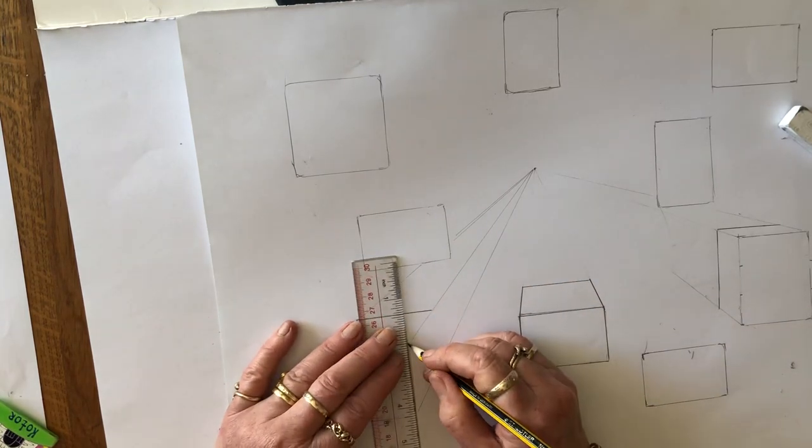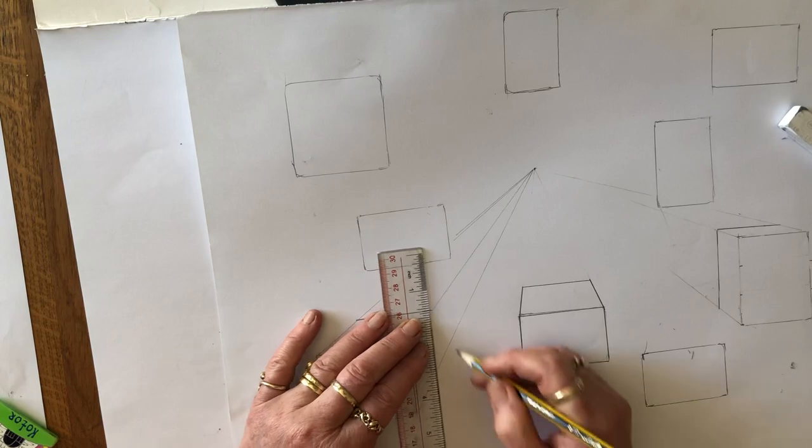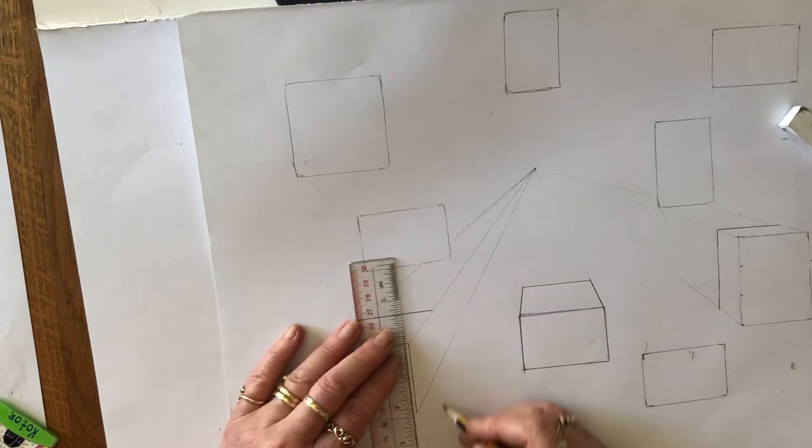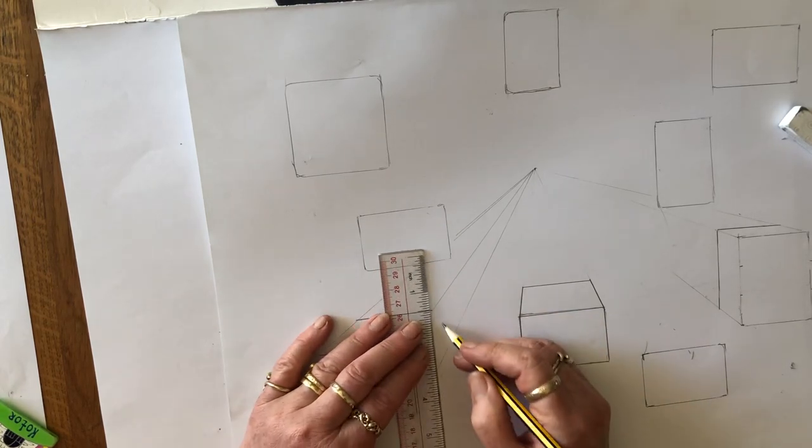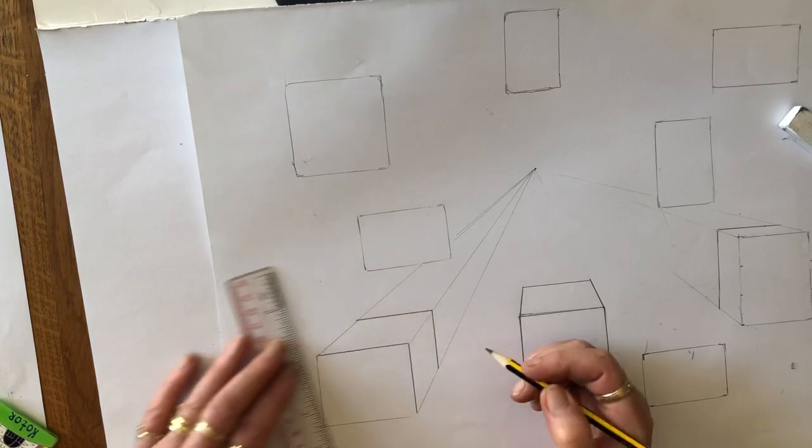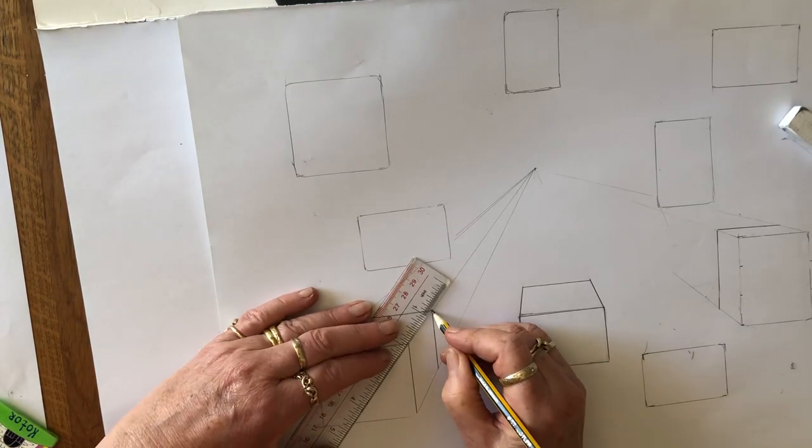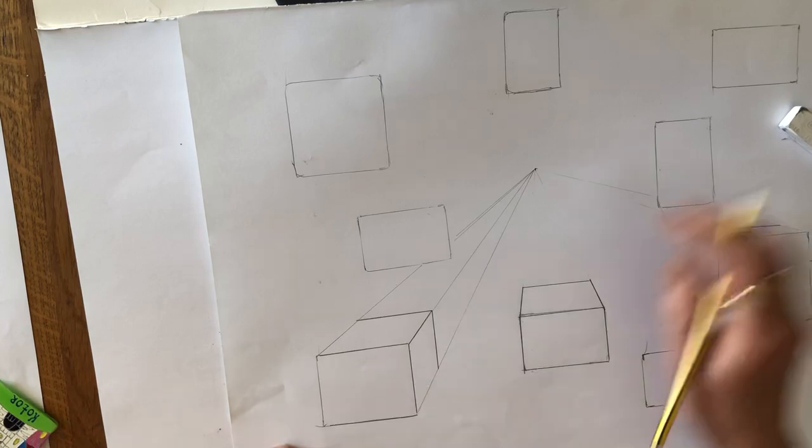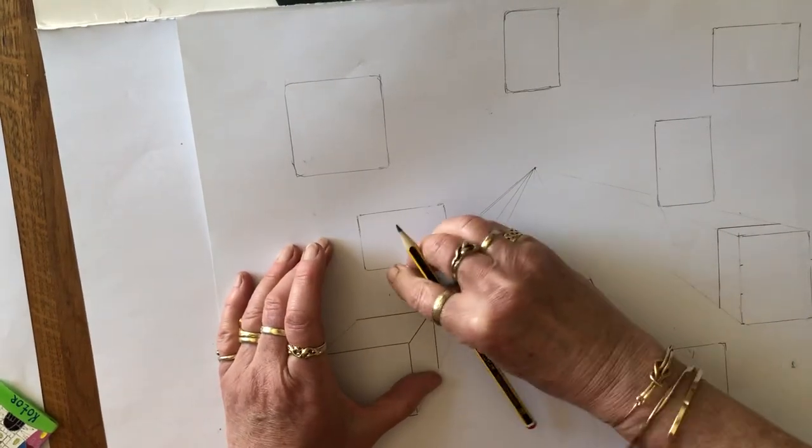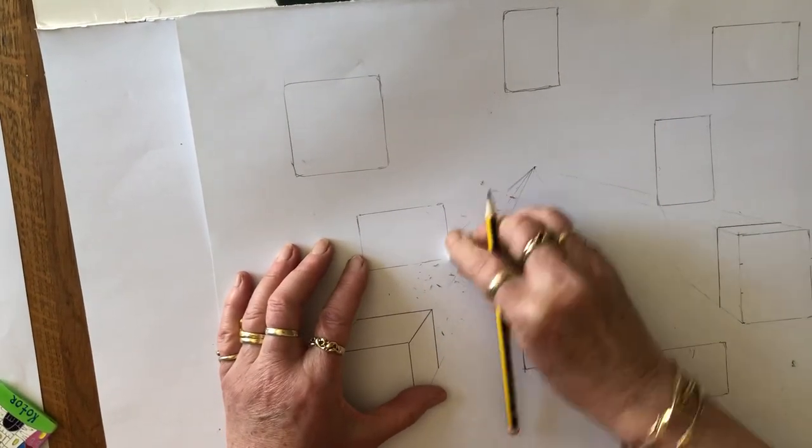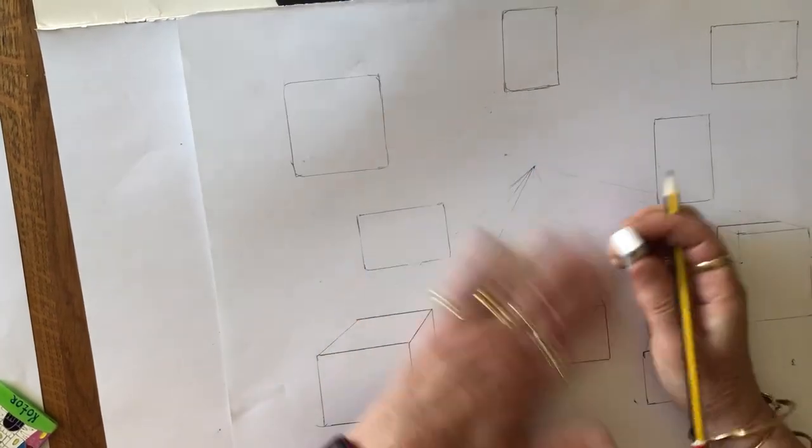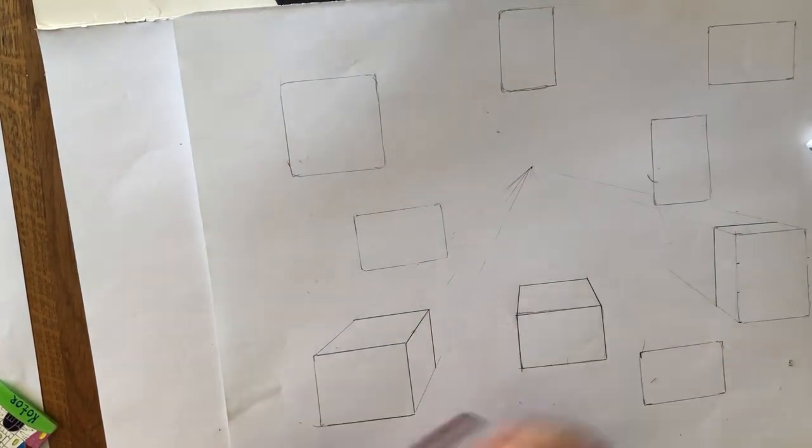And now this time because you see another side, where that joins there, but remember you've got to do a parallel line. You've got something like that. And again you can just sharpen it all up, and again you can just rub that line out. And as you work your way around, you'll see you get the effect of boxes flying.